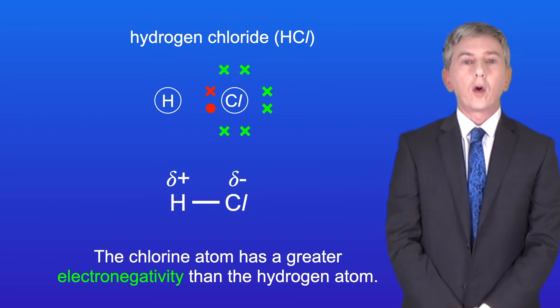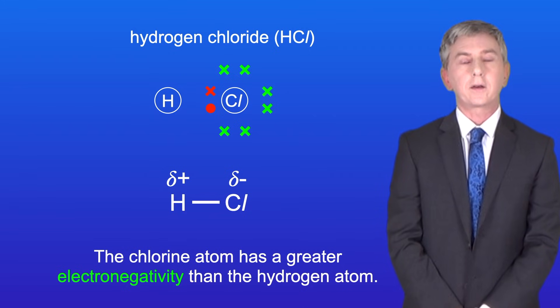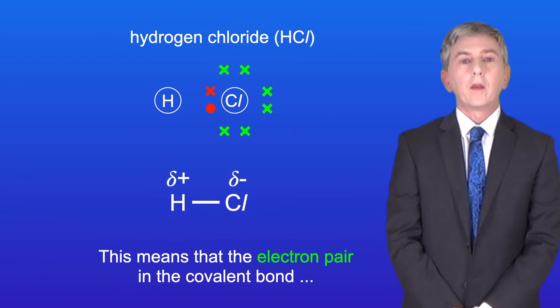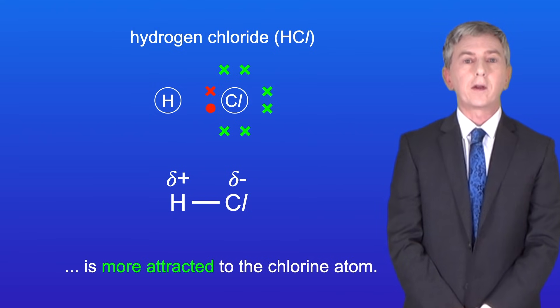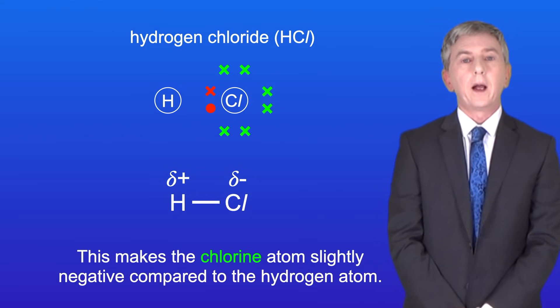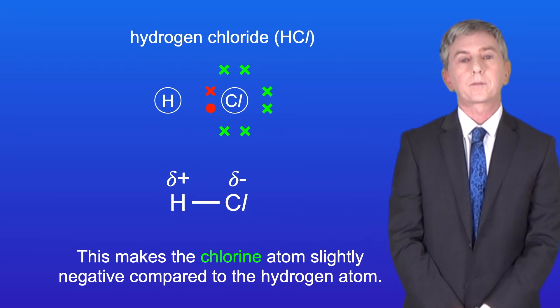The chlorine atom has a greater electronegativity than the hydrogen atom. This means that the electron pair in the covalent bond is more attracted to the chlorine atom, and this makes the chlorine atom slightly negative compared to the hydrogen atom.